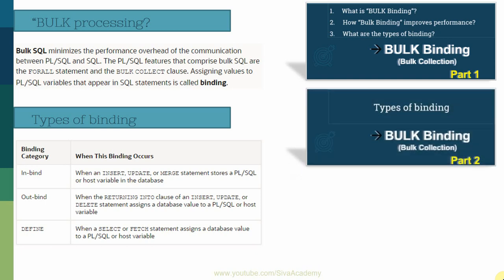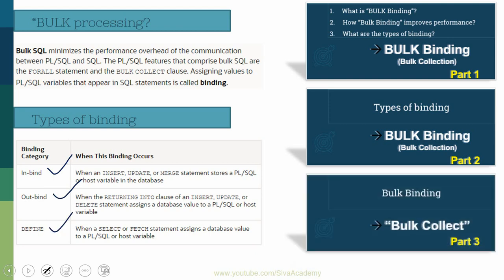In part two, we covered the types of bulk binding in detail — in-binding, out-binding, and the define category. In part three, we explored the define category and how to use the BULK COLLECT keyword to transfer the output of a SELECT statement or cursor into a collection variable.